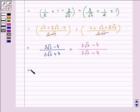Now here, if you carefully observe, we have 3 root 3 minus 4 into 3 root 3 minus 4, which will be 3 root 3 minus 4 the whole square.